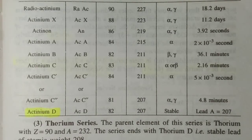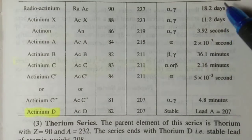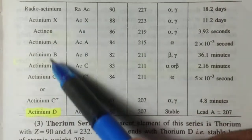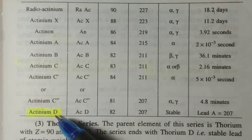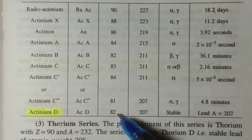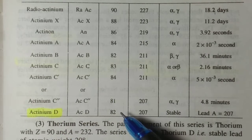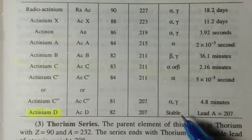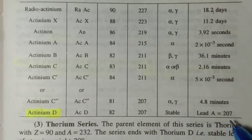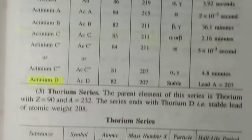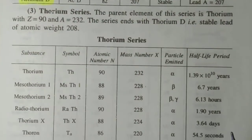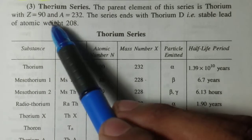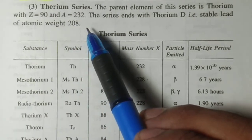Some part of the actinium series is shown here. The actinium series ends with actinium D with atomic number 82 and mass number 207, which is stable lead-207. Now the third is thorium series. The parent element of this series is thorium with Z equal to 90 and A equal to 232.